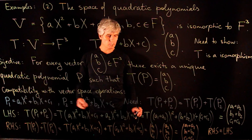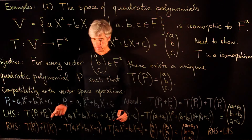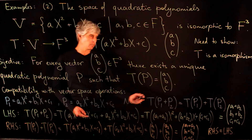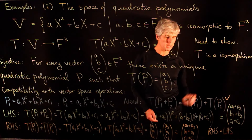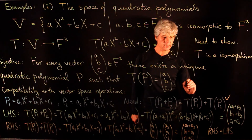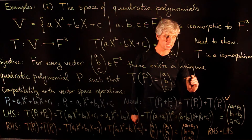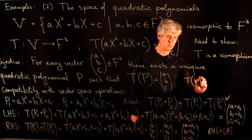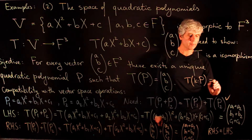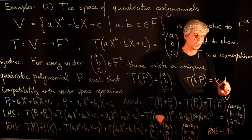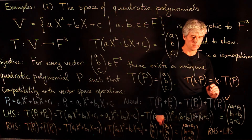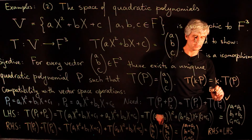The second property is left as an exercise: we need to show that T(K·P) = K·T(P) — multiplying a polynomial by a scalar and then applying T gives the same result as multiplying T(P) by the same scalar.